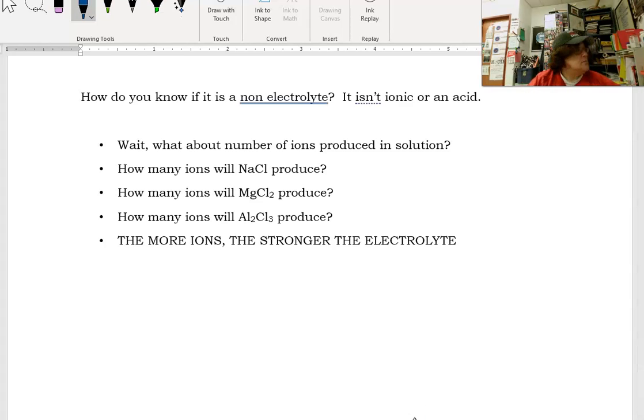It says, how many ions will sodium chloride produce? Well, dissociate sodium chloride. Sodium chloride, when we put it in water, will dissociate into sodium ions and chloride ions. It's making two ions.